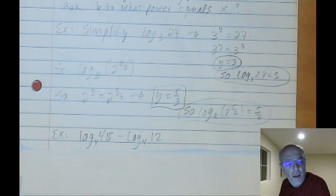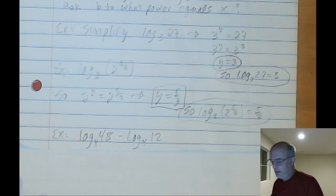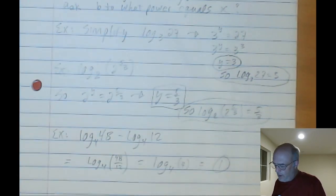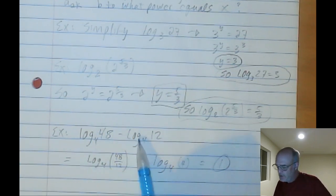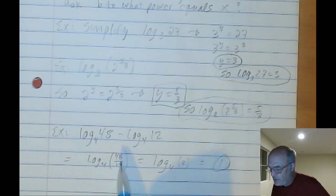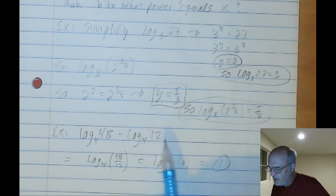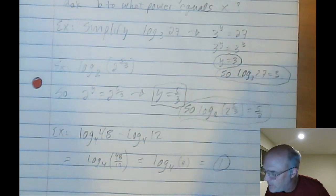Okay, last one. Log 4 of 48 minus log 4 of 12. So one of our rules from the other page was that when there's a difference of logs of the same base, it's the same as the log of that base to the fraction of those numbers. This one divided by that one. So that is 1. Log 4 of 4 is going to be 1 because 4 to the 1 power is equal to 4.